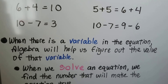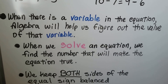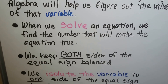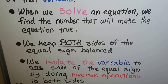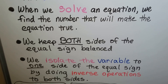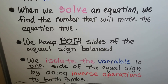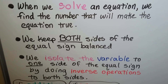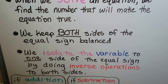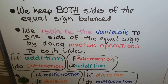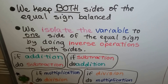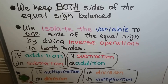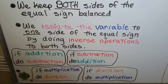When there's a variable in the equation, algebra will help us figure out the value of that variable. When we solve an equation, we find the number that will make the equation true. We keep both sides of the equal sign balanced. We isolate the variable to one side of the equal sign, and we do that by doing inverse operations to both sides.